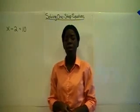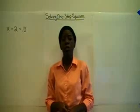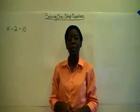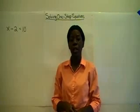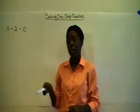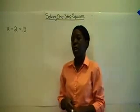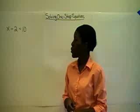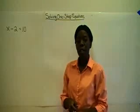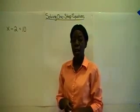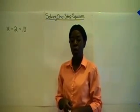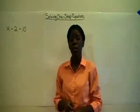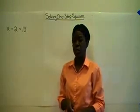To solve one-step equations, you just do the inverse or the opposite operation that is in the equation. As you can see, x minus 2 is equal to 10, and the current operation is subtraction. So what we're going to do is the opposite or the inverse operation, which is addition.